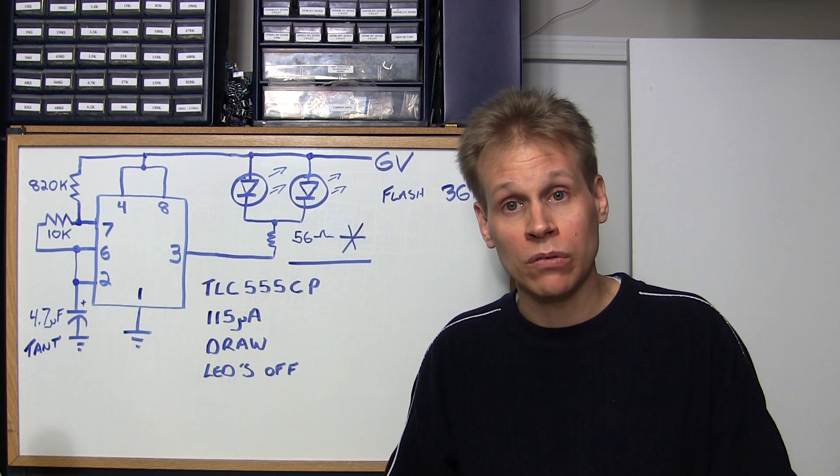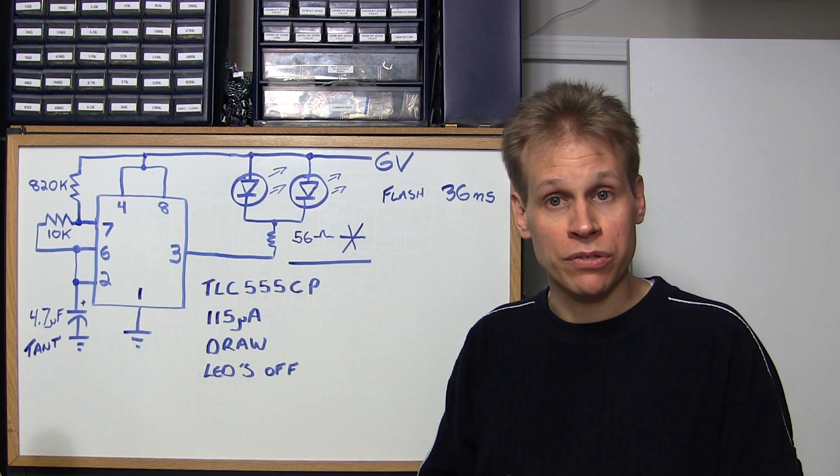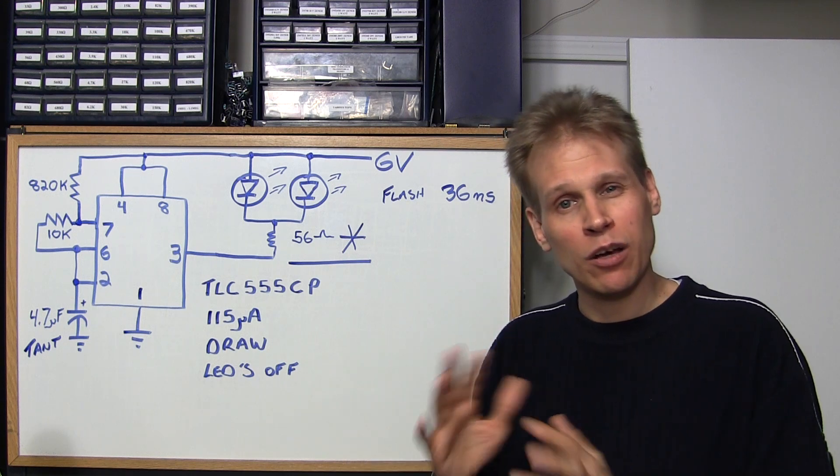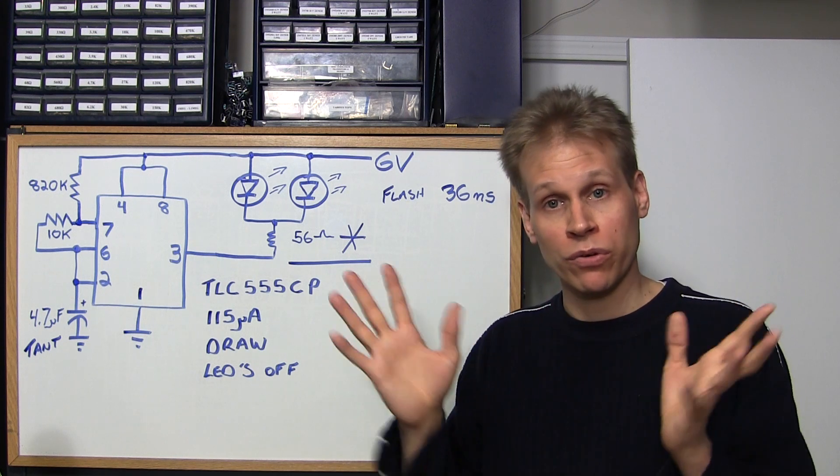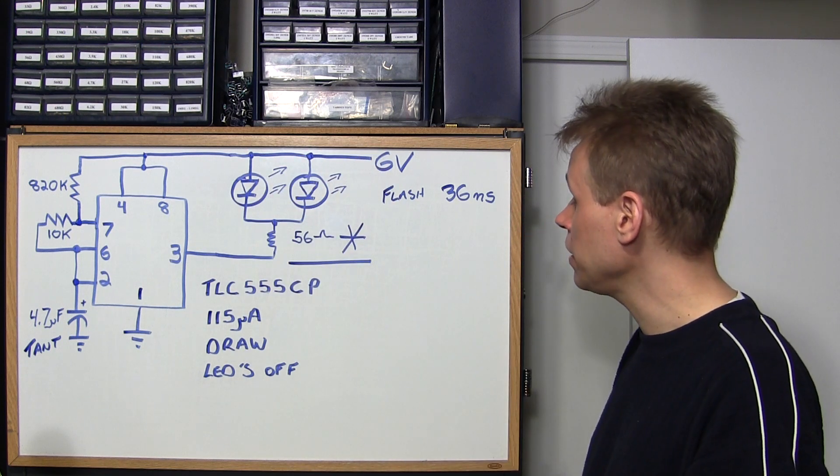But the CR2032's are very small batteries and this just happened to work out and maximize on the life. Again about a month to a month and a half worth of flash life continual 24 hours a day with those little circuits being powered with the values that you see right here.